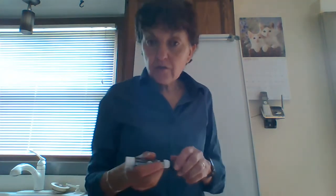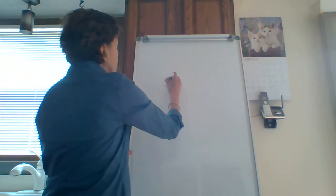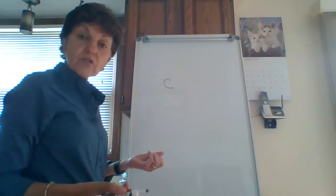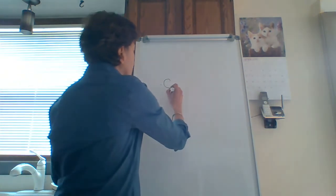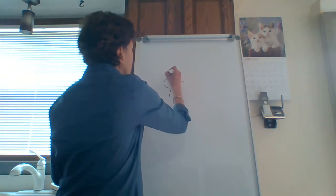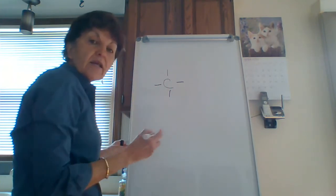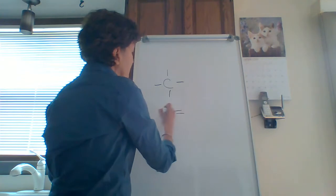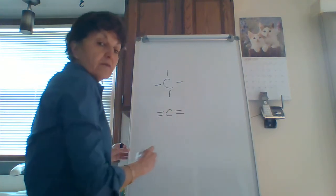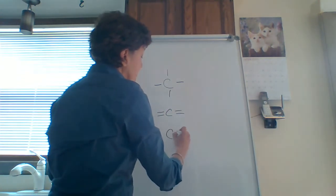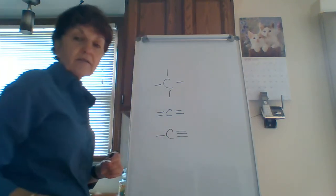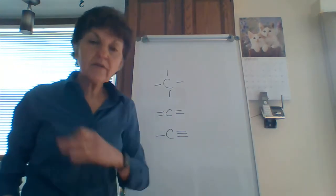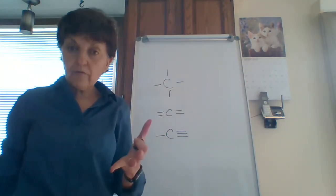If you remember from intro chemistry days, carbon has four valence electrons. So what you're going to see is that carbon always has four bonds. It could have four single bonds, it could have two double bonds, or it could have a triple bond and a single bond. But you'll always see four bonds around carbon — never five, never three, always four.